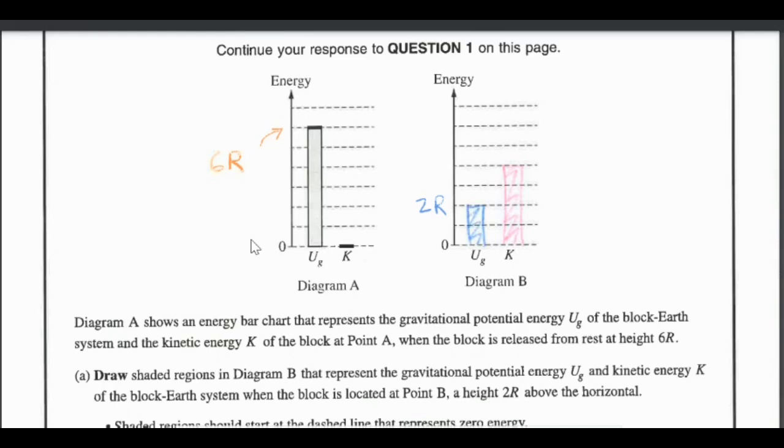At point B we were at a height of 2R so then obviously I would go two dashed lines up to represent a height of 2R. Because of the conservation of energy I want to make sure I have six little blocks of energy total, which means that I go up four blocks for my kinetic energy to make sure the energy is conserved overall.